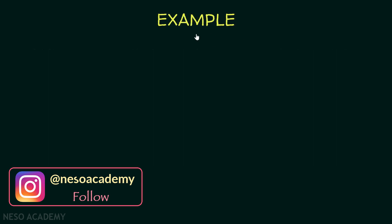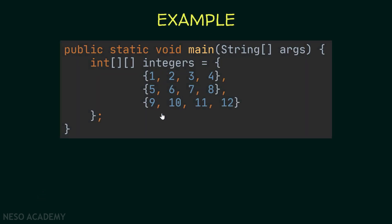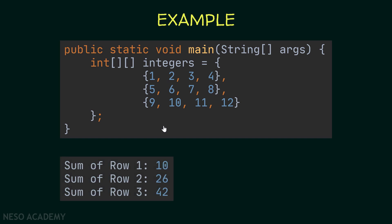Let's see an example. Suppose that you have this array over here. The first program should display the sum of the first row is 10, the second row is 26, and the last row is 42. For example, this is the first row — 1 plus 2 plus 3 plus 4 will give us 10.